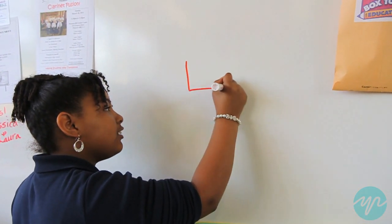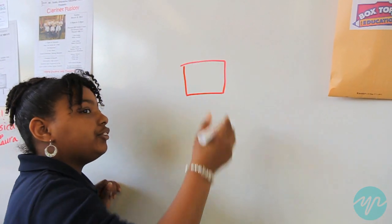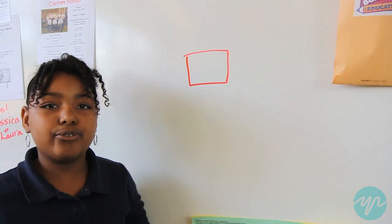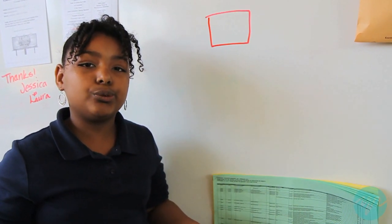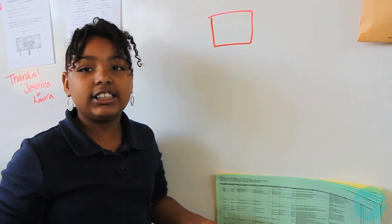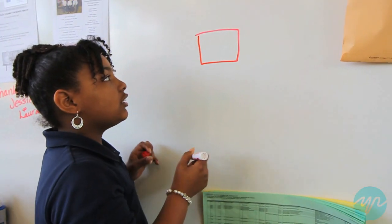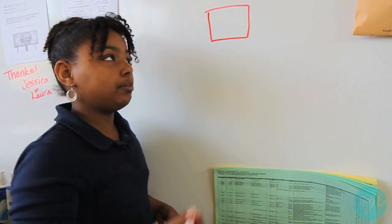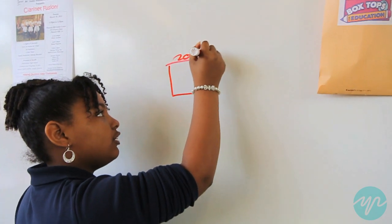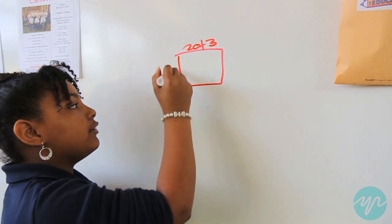So first you draw a box and then you have your numbers. You can do 23 times 7. So I know that 23 is 20 plus 3, and 7.